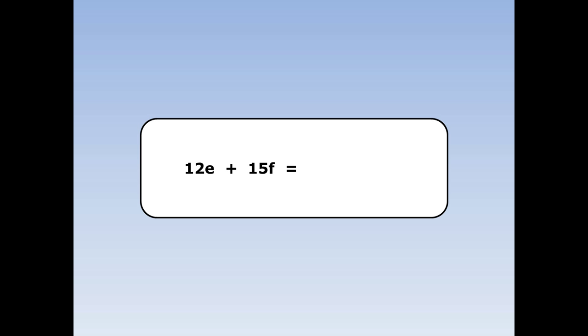I'm going to factorise 12e plus 15f. The first thing I'll do is find the highest number that goes into 12 and 15. The highest number that goes into 12 and 15 is 3. Next I'm going to put some brackets. Then, 3 times something is 12e — the answer is 4e. 3 times 4e is 12e.